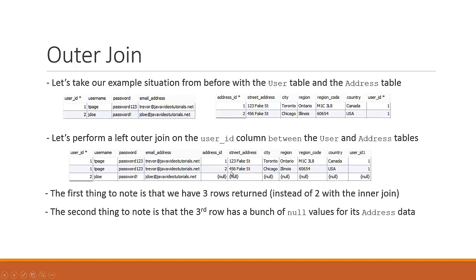What would that look like? If you remember, in the inner join scenario we only had two rows that matched. But here, when you do a left join, we have three rows that match. Because the left join returns all the data from the left-hand side table. The user table is on the left — I'll show you what 'on the left' means when we're actually doing it in syntax, because it's not as obvious in syntax. Since we're using a left join, we will always see all of the rows from the left-hand side table.